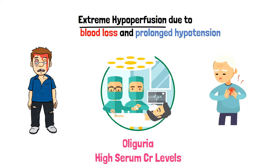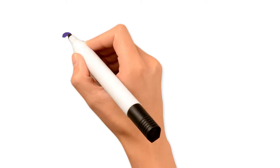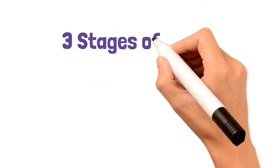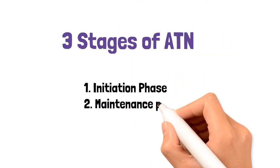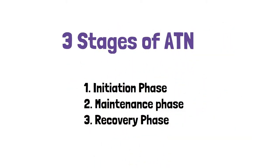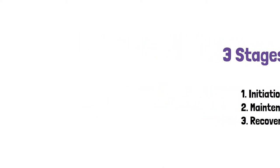Acute tubular necrosis happens in three stages: the initiation phase, the maintenance phase, and the recovery phase. Let's go into detail on each of these phases.